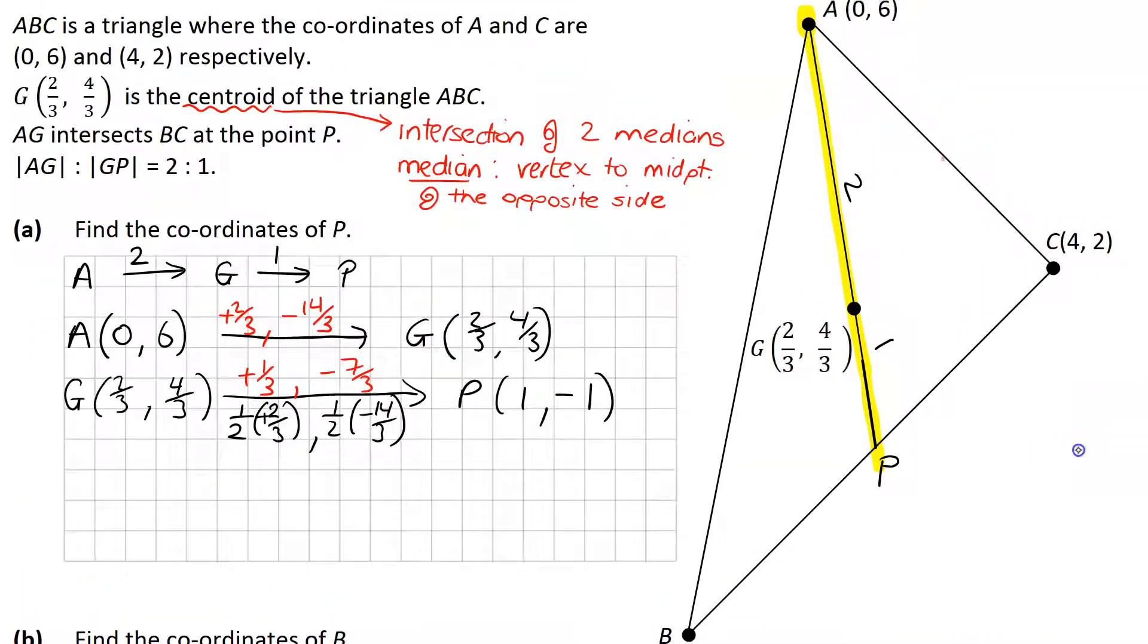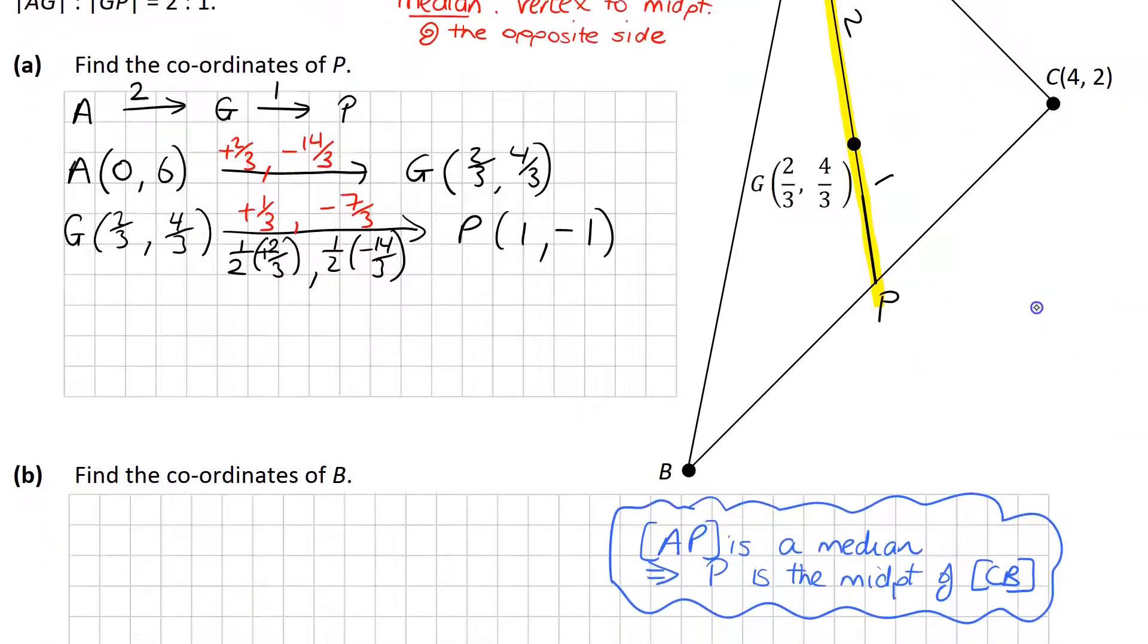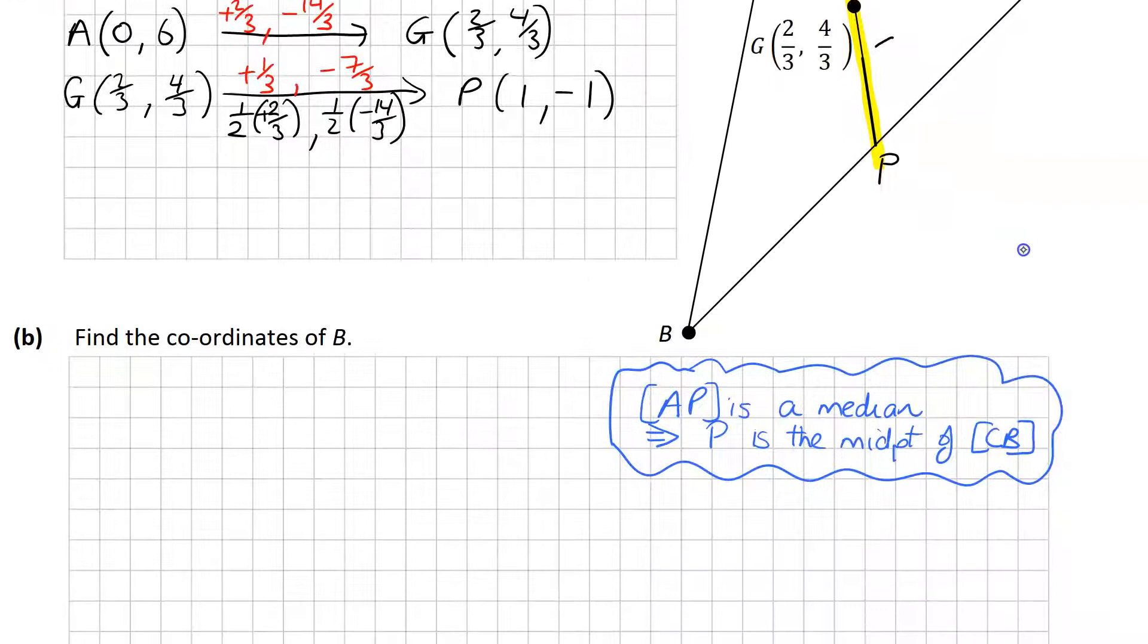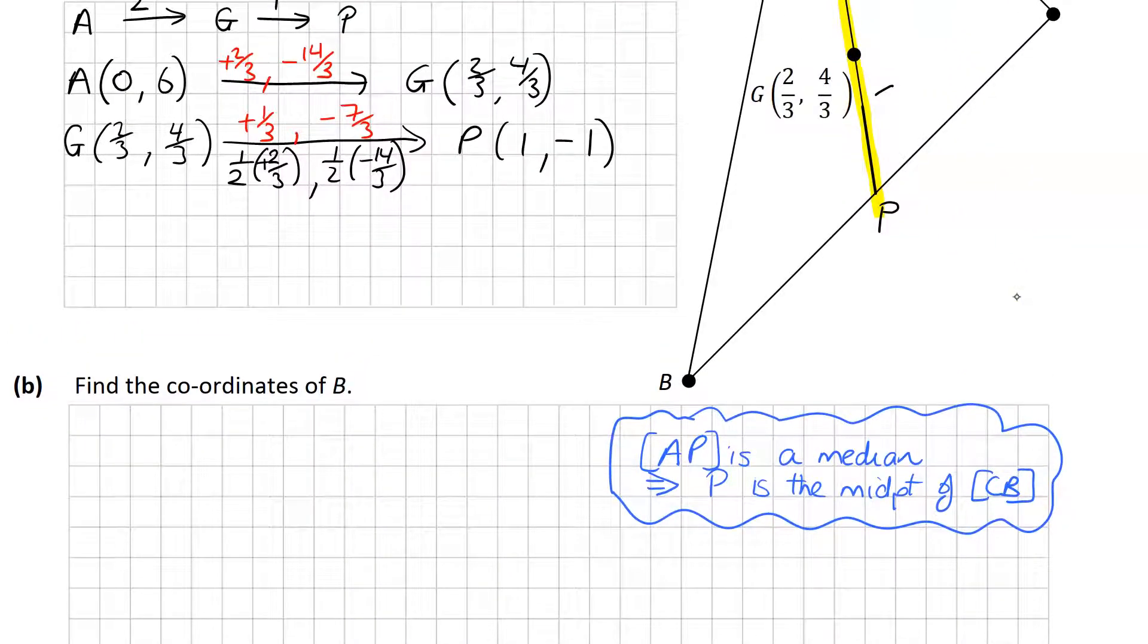Now they don't really tell us anything about it, but they don't need to, because already they said that G was the centroid, and I've just said that the centroid is the intersection of two medians. And a median is from the vertex to the midpoint of the opposite side. So we know that P is a midpoint, and we now know what P is. So we'll go from C to P, and then we'll go from P to B.